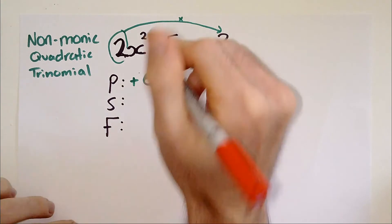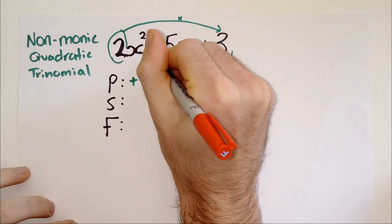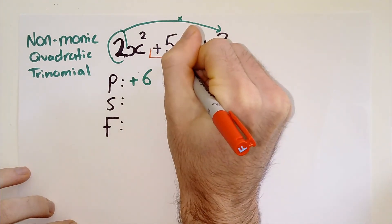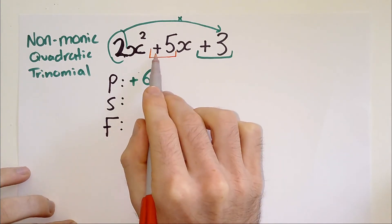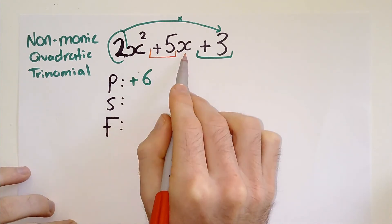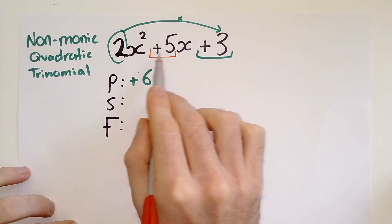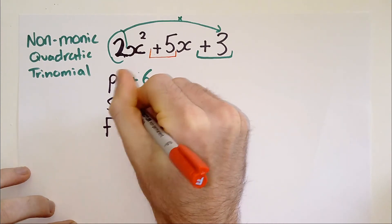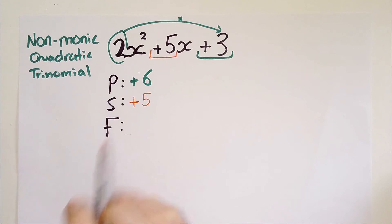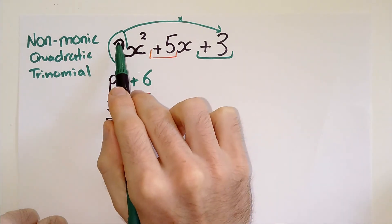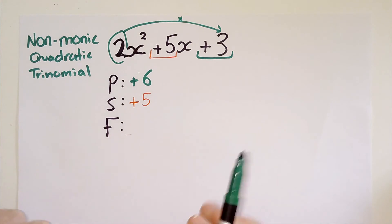Now the S, the sum of our two numbers that we're going to find, is going to still be the number, including the sign before the X term. So plus five X plus five. So plus five is our sum. That is the same as with the monic quadratic trinomials. It's just that P step where you multiply the two by the three that is different.